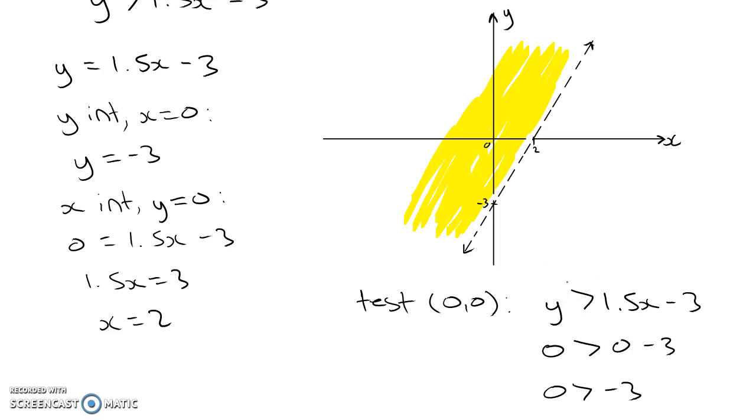Whenever the inequality has an equals, that tells us that the solutions on the line do satisfy the inequality. But when there's not an equals sign, when we just have greater than, the solutions on that line do not satisfy the inequality, and so we draw a dashed line.